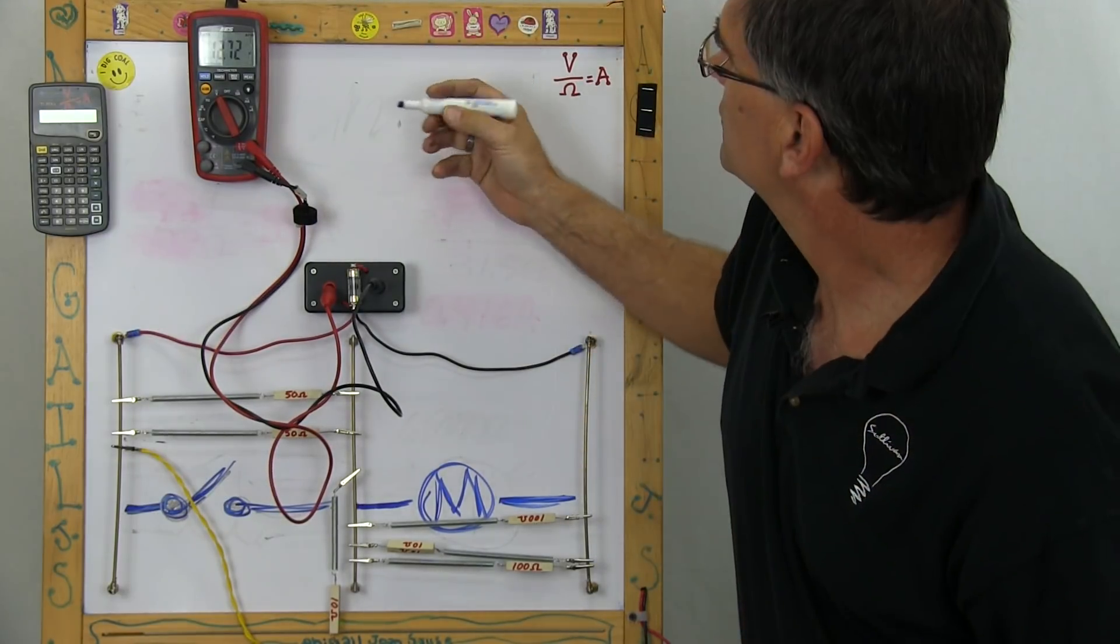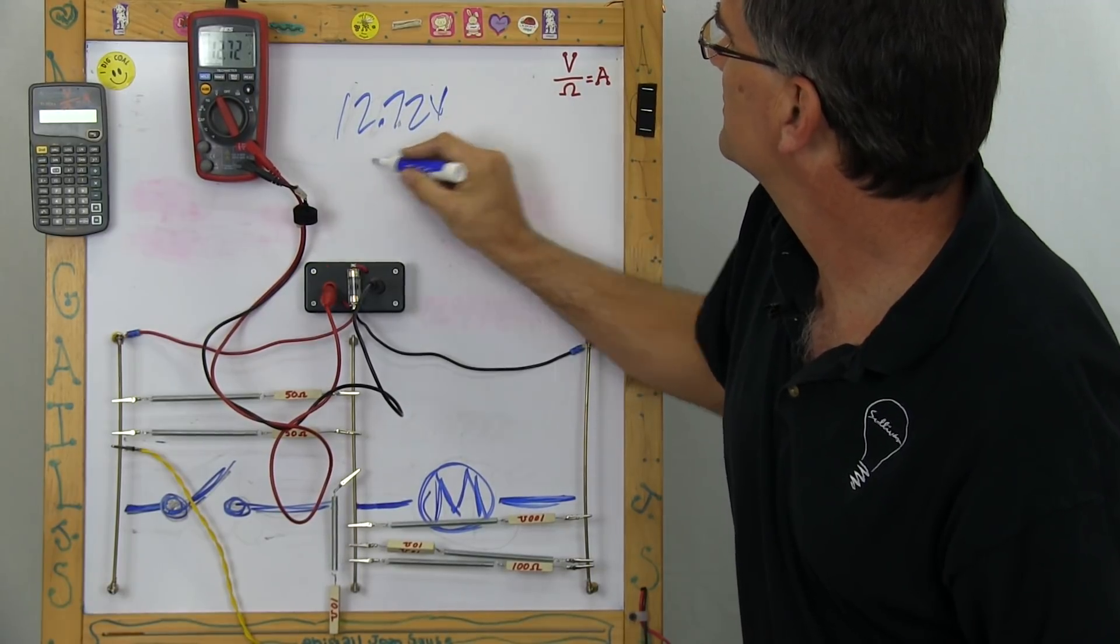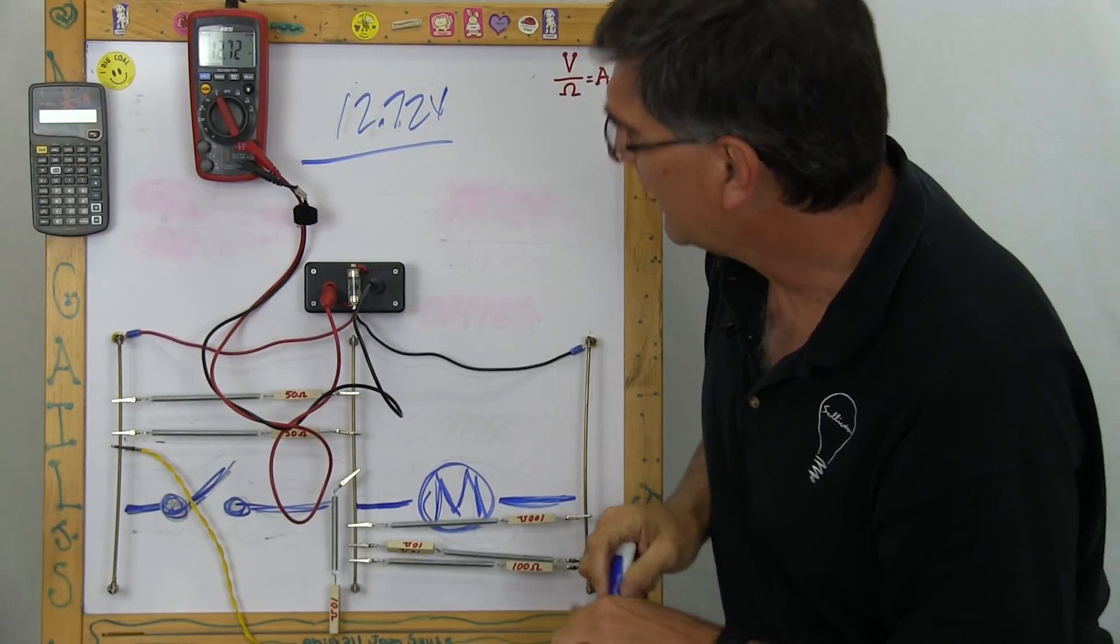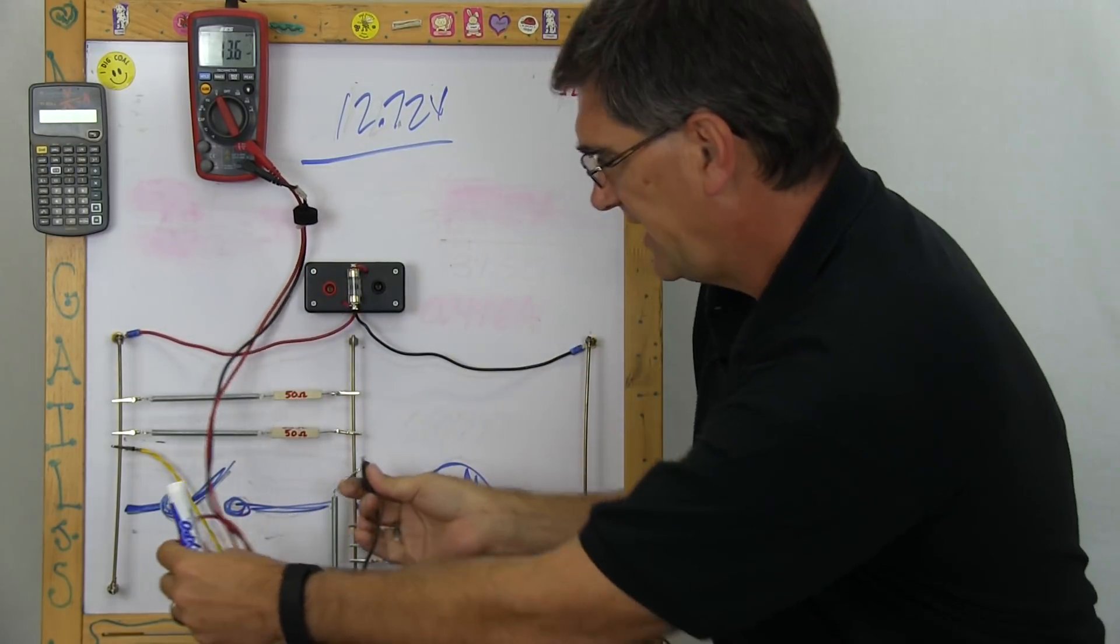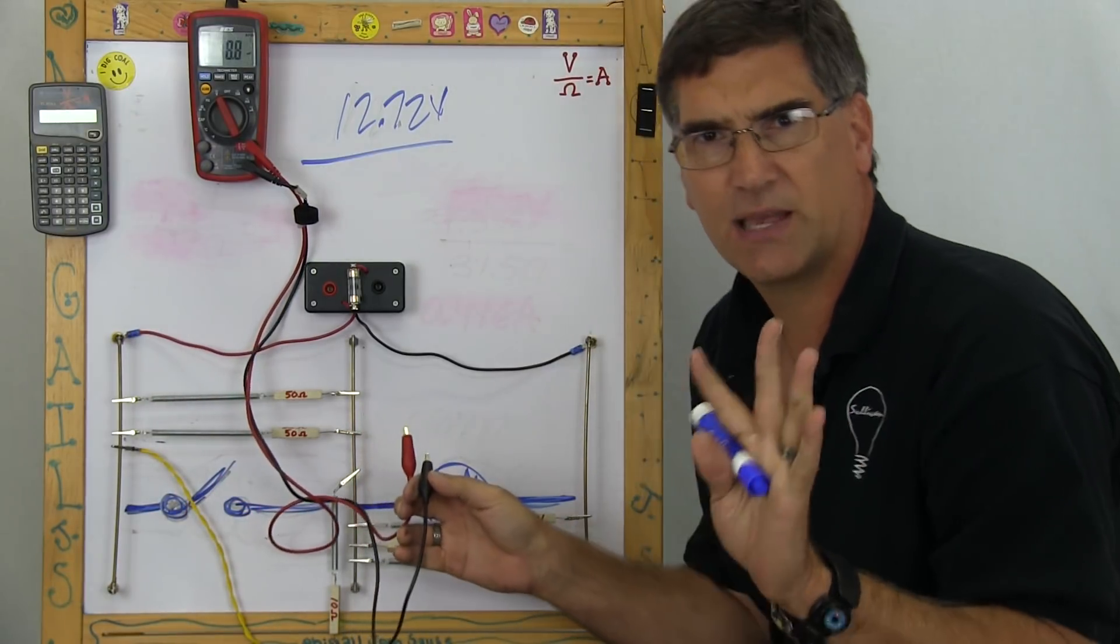So now, 12.72 volts, and since I used the volts over ohms equals amps, what I would then do would be to take the meter, and I could read each of these two sections individually, and you only need two segments.